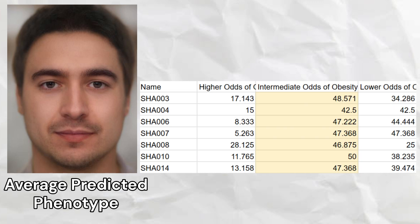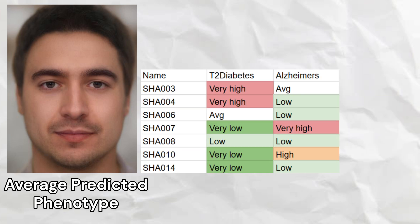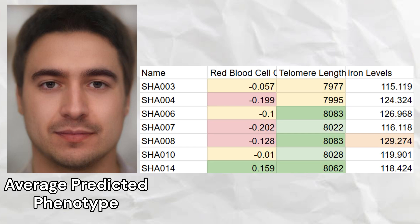All seven samples had average odds of obesity. Four samples had lower odds of type 2 diabetes, and two samples had high odds of type 2 diabetes. Four samples had low odds of Alzheimer's, and two samples had high odds of Alzheimer's. Almost all samples except one had lower than average red blood cell count. Five out of seven samples had longer than average telomeres, which leads to prolonged lifespan, and one sample possibly had hemochromatosis on the basis of predicted iron levels.